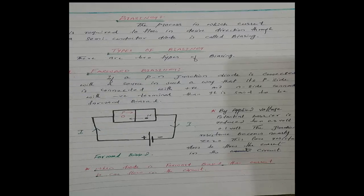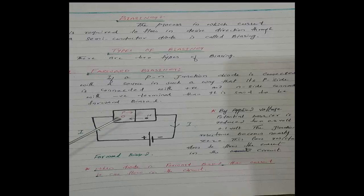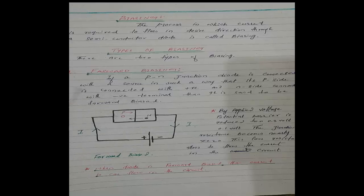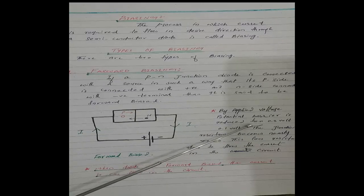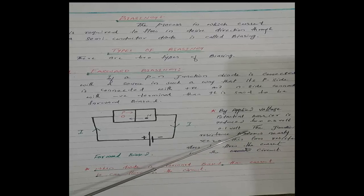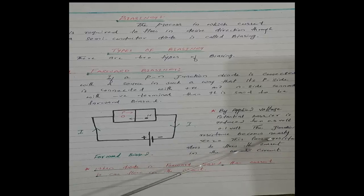In Forward Biasing, we connect the semiconductor diode to a circuit with the battery and source. The diode has two elements: p-type and n-type. For forward biasing, p-type is connected with the positive terminal and n-type with the negative terminal. By applied voltage, the potential barrier is reduced from 0.3V to 0.1V, and the junction resistance becomes nearly 0.